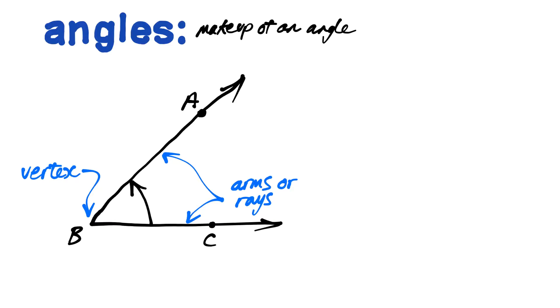Now an angle is actually the amount of turning from one ray to another. These are also called arms, and the point is called the vertex.